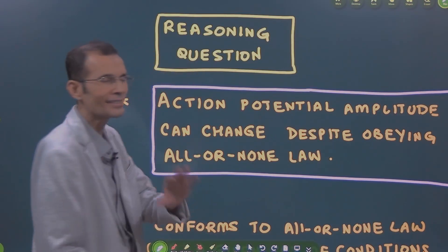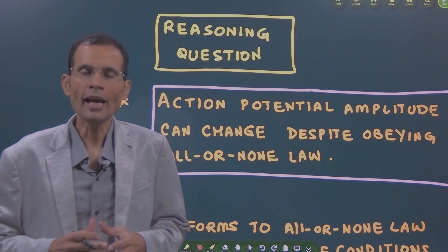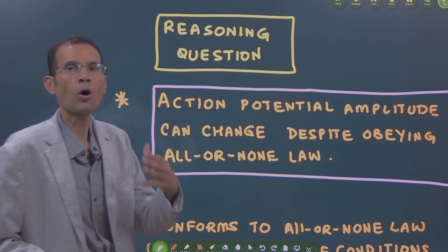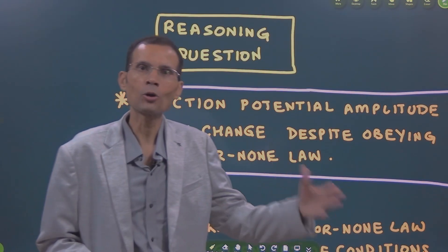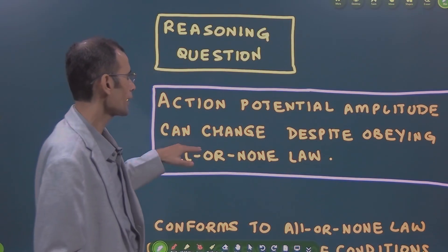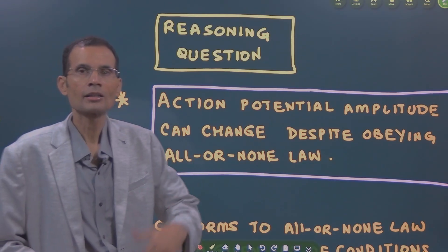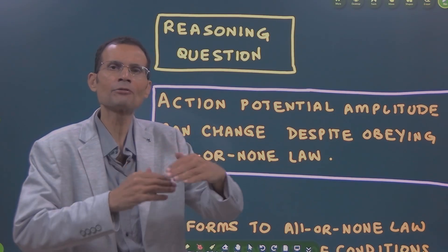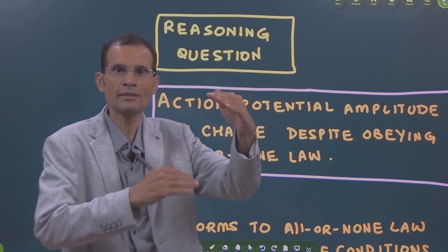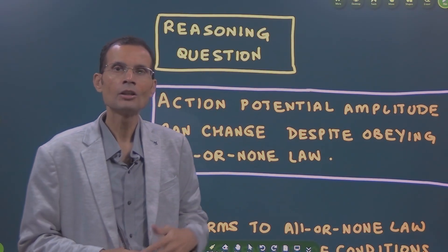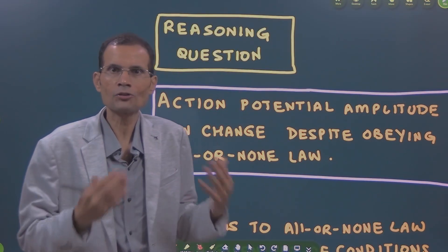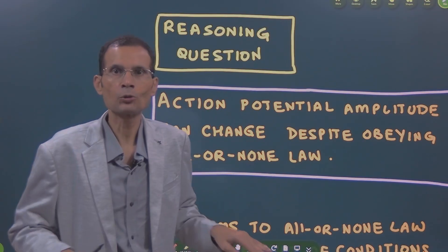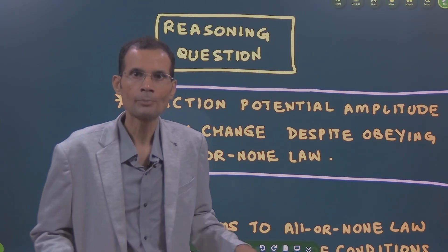Please understand the question itself. On one hand, we say action potential obeys all or none law. That means if threshold is reached, then it will generate — action potential will generate with full response, 100 percent response. Or if threshold was not reached, then none, zero. It will not develop at all.